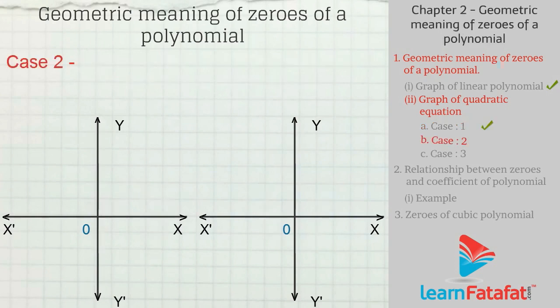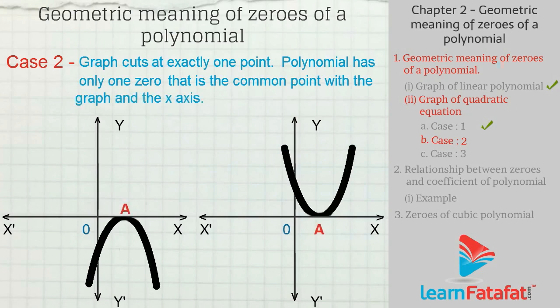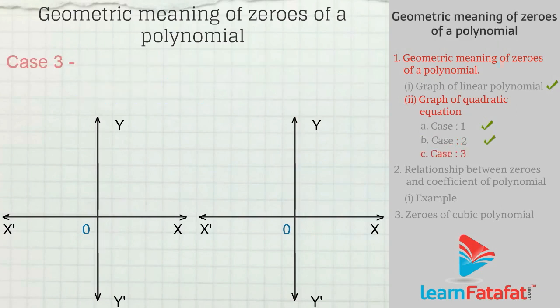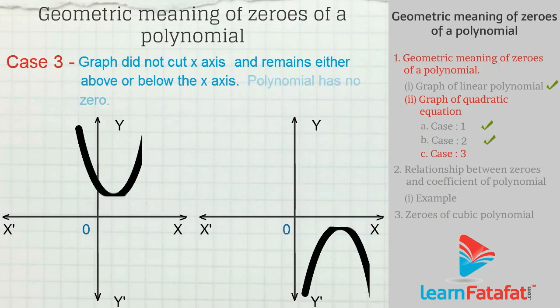Case 2: The graph cuts at exactly one point. In this case, the polynomial has only one zero — the common point of the graph and the x-axis. Case 3: The graph does not cut the x-axis and remains either above or below it. In this case, the polynomial has no zero.